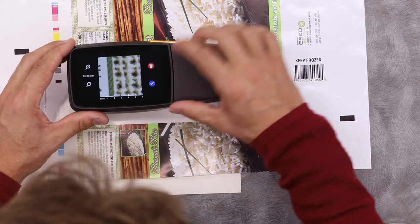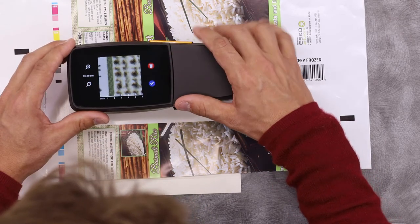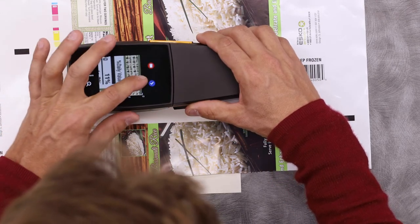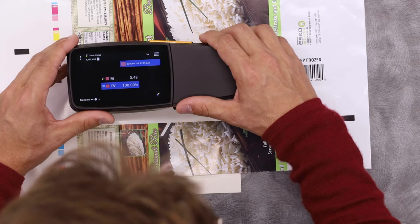If I want to save it, I simply hit the blue check. If I want to discard it, I can hit the red trash can. I'll save this one.